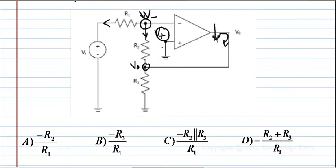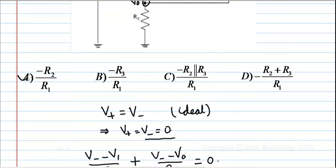that is the voltage gain, that is the output voltage by input voltage, which we got as minus R2 by R1, and hence the final answer is option A.